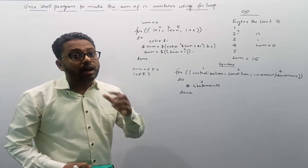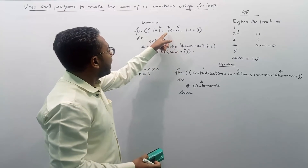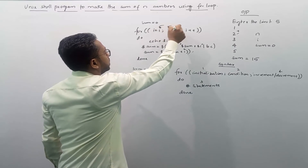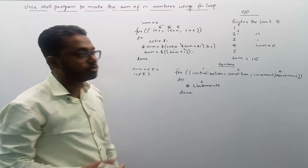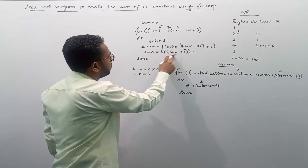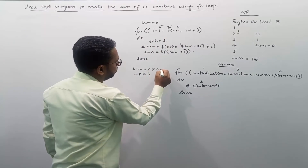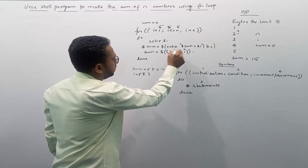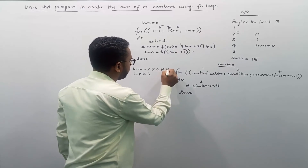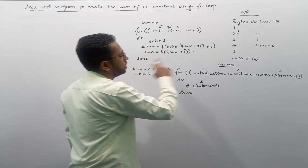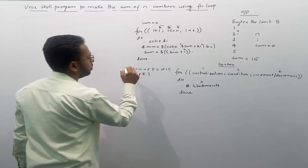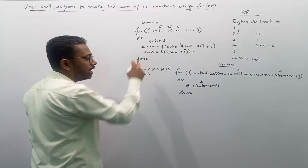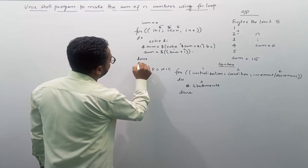i keeps incrementing until it reaches 5. When i equals 5, the condition 5 ≤ 5 is still true. By the fourth iteration sum was 10, so 10 plus 5 gives 15. We get 15 stored in sum. We then need to print it out using echo dollar sum.